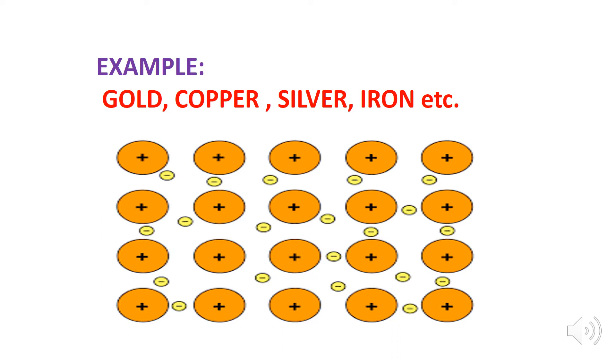Some other examples of the metallic bond include all metals including gold, copper, silver, iron, etc.